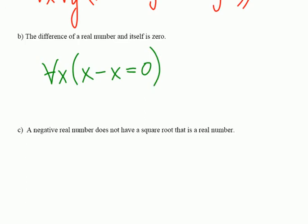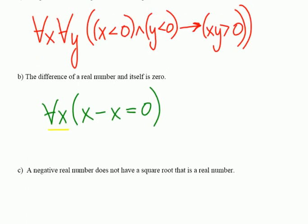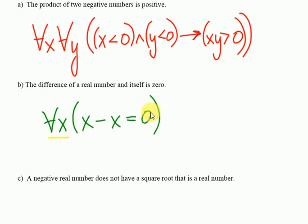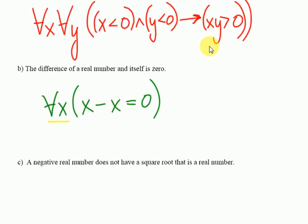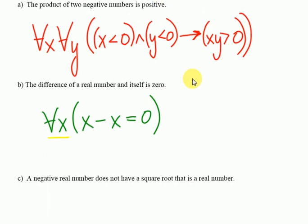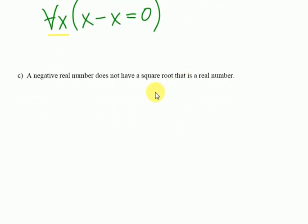Look, for all x, it's true that x minus x equals zero. And implicit in this statement is that x is a real number because that's the domain. x consists of all real numbers. Alright, so that was pretty easy.